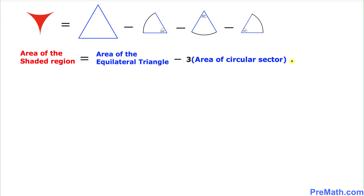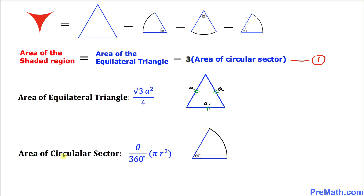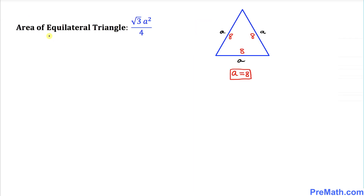Since the three circular sectors are identical, we can write: area of shaded region = area of equilateral triangle minus three times the area of the circular sector with a 60-degree angle — and I'll call this equation number one. The equilateral triangle area formula is (√3 / 4) × a², and the circular sector area formula is (θ / 360°) × π r², where θ is 60 degrees in our case.